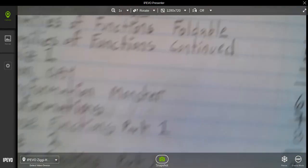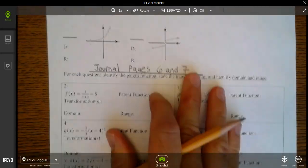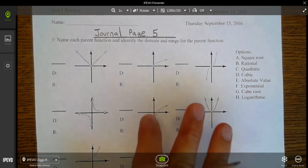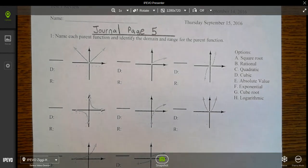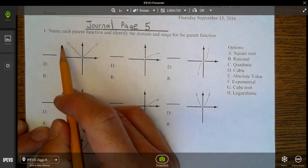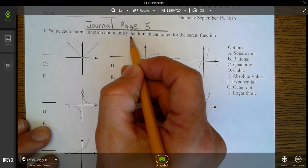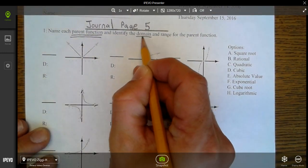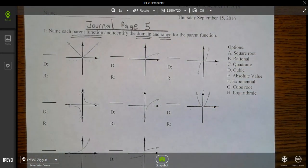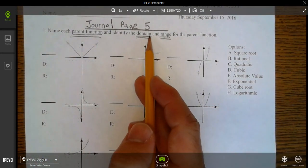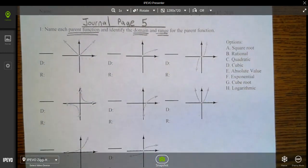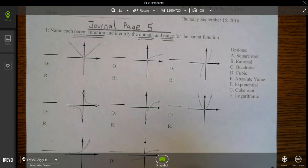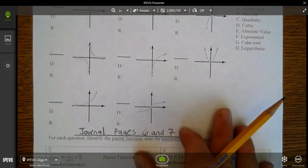Now you know when the test is and when the review is. Let's look at the review. On the videos, because you have two days, I'm not going to go over the problems in detail, but I am going to give you what pages in the journal to look at. For number one, it wants you to identify the parent function, the domain, and the range of the parent functions. This is in journal page 5.